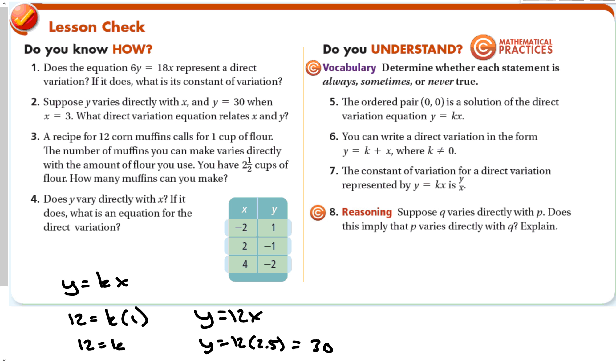Does y vary directly with x? Checking y over x for each pair gives negative ½, negative ½, negative ½ — yes, the ratio is constant. The equation is y equals negative ½ x.